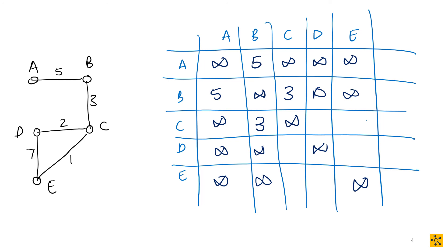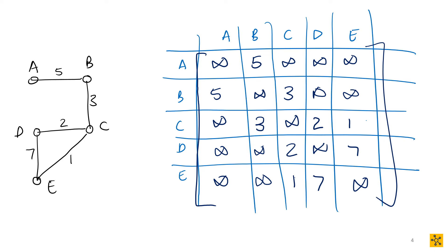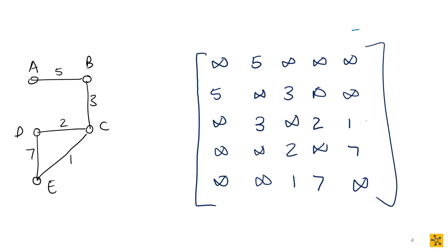Continuing: C is connected to D with weight two, to E with weight one, and B already covered. D is connected to E with weight seven. The matrix is symmetric because it's a simple graph. So W(G) equals that matrix — very similar to the adjacency matrix, except zeros are replaced by infinity where no edge exists, and ones are replaced by the actual edge weight where an edge does exist.